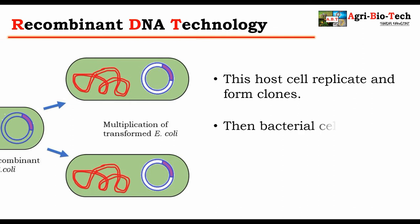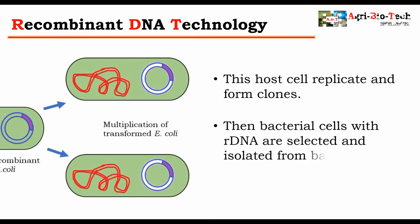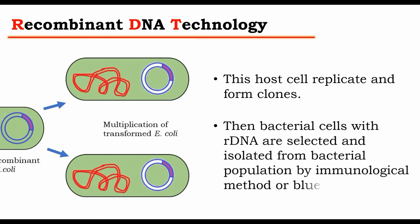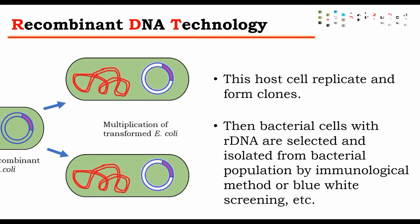Bacterial cells with recombinant DNA are then selected and isolated from the bacterial population, either by immunological methods, nucleic acid hybridization, or blue-white screening.